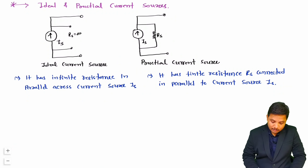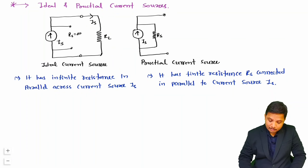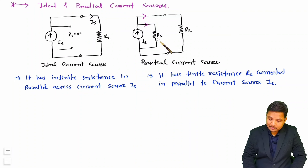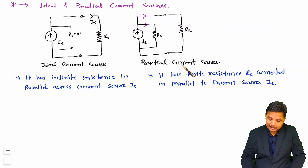When you connect a load to an ideal current source, constant current IS is delivered to the load. But when you connect a load to a practical current source, IS gets split into two branches: a fractional part flows through the internal resistance RS, and the remaining fractional part flows through RL. So an ideal current source delivers constant current IS, but a practical current source cannot deliver constant current through the load.